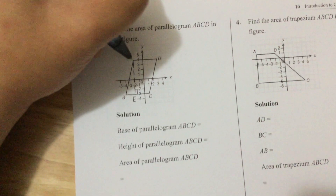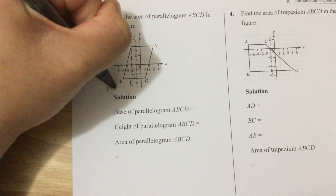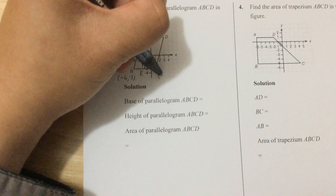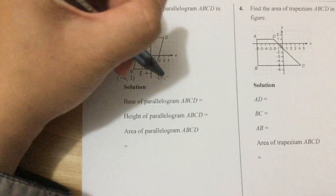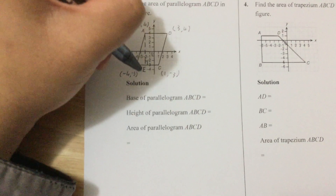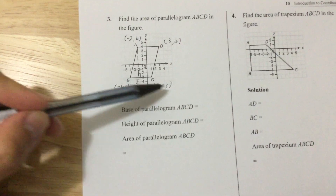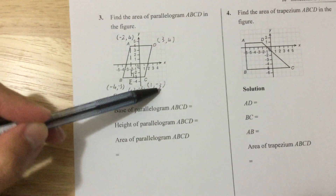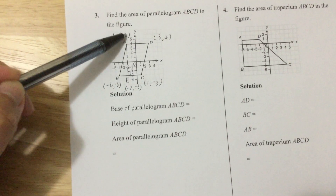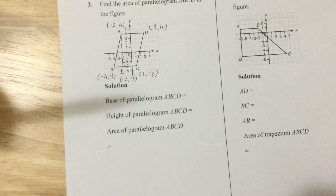Now let's write down the coordinates. For point A: negative 2, 4. For point B: negative 4, negative 3. For point C: 1, negative 3. For point D: 3, 4. For point E, the answer is negative 2, negative 3. Note that for all horizontal lines, the y-coordinates are the same: negative 3, negative 3, negative 3. For line AD, the y-coordinates are both 4. For vertical lines, the x-coordinates are equal: negative 2 and negative 2.